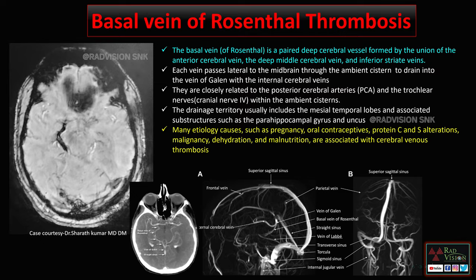Next case: this patient presented with headache and vomiting. There is a linear serpiginous vascular-like structure noted in the right ambient cistern which is showing blooming on GRE. This is a classical location of the basal vein of Rosenthal, so this is a basal vein of Rosenthal thrombosis.